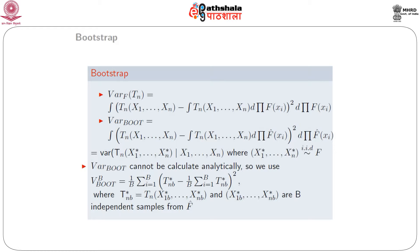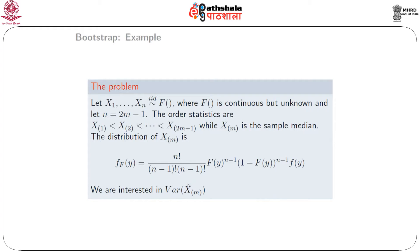For each of the B bootstrap samples, t_n is calculated. For the b-th sample, t_n is denoted as t_{n,b}^*. The star indicates it is a bootstrap estimate. Then we find the variance of those bootstrapped estimates, which is (1/B) * sum_{b=1}^{B} (t_{n,b}^* - (1/B)*sum t_{n,b}^*)^2 — that is the mean square — and we get variance_boot(B). We illustrate this principle in the context of an order statistics example.